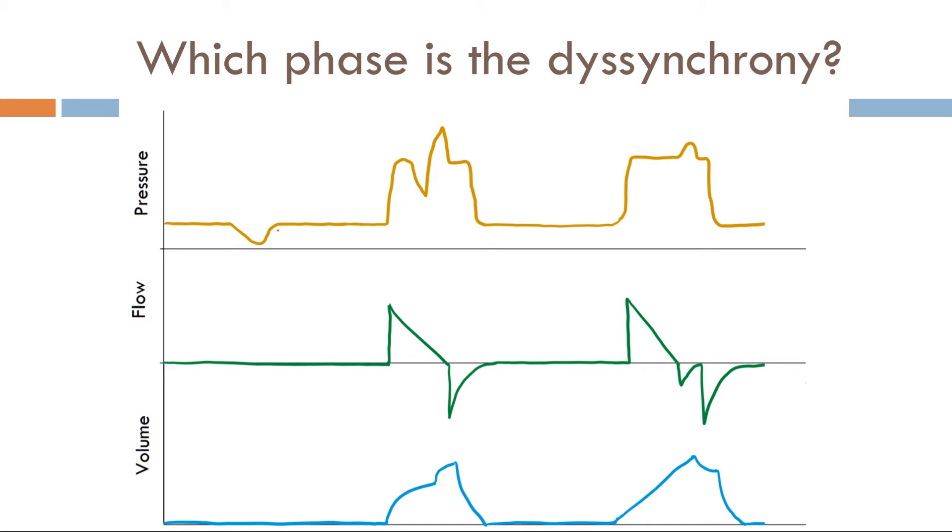There's a negative deflection right here in the pressure scalar. What does that mean? A negative deflection in the pressure scalar means inspiration. Now the patient is inspiring, but there's no breath being triggered. This is an issue with trigger. Therefore, this is a trigger dyssynchrony.